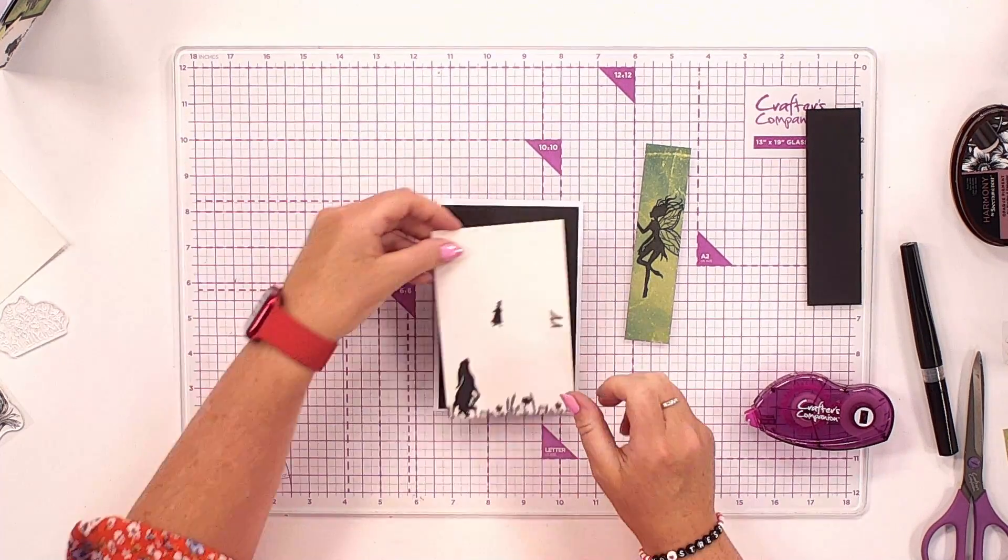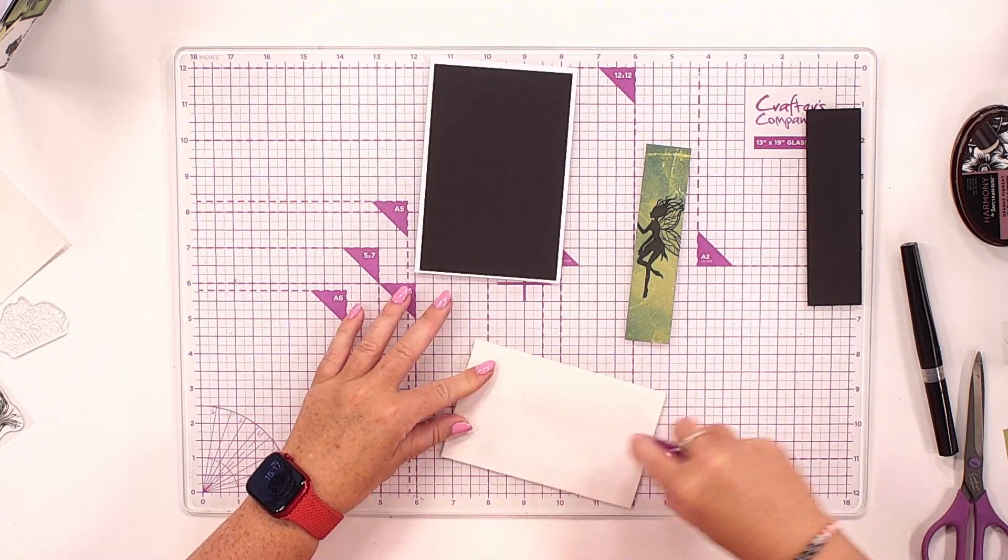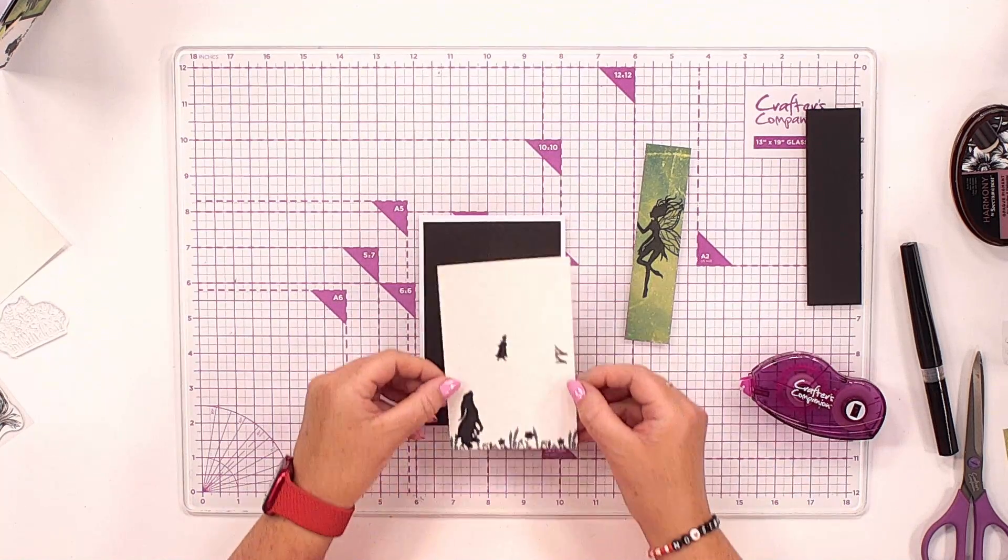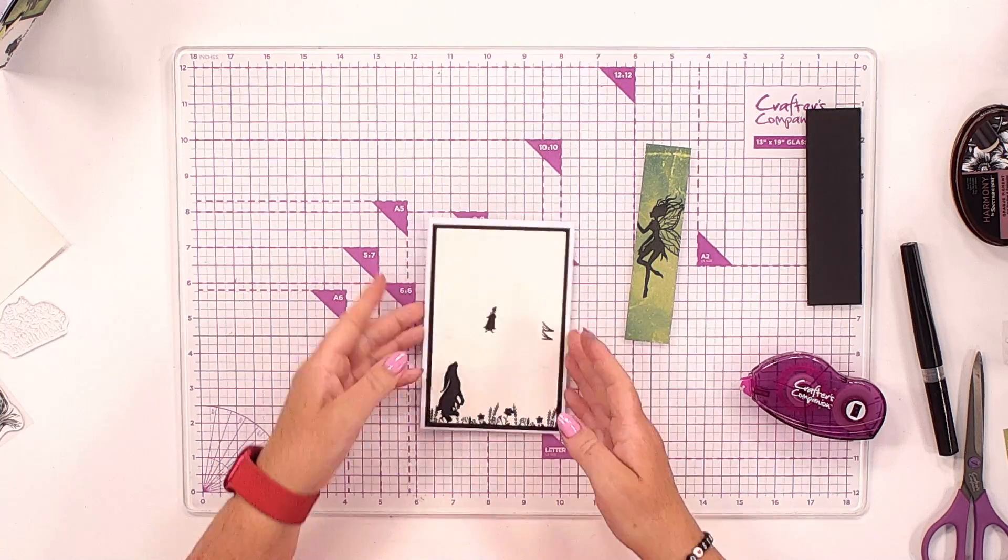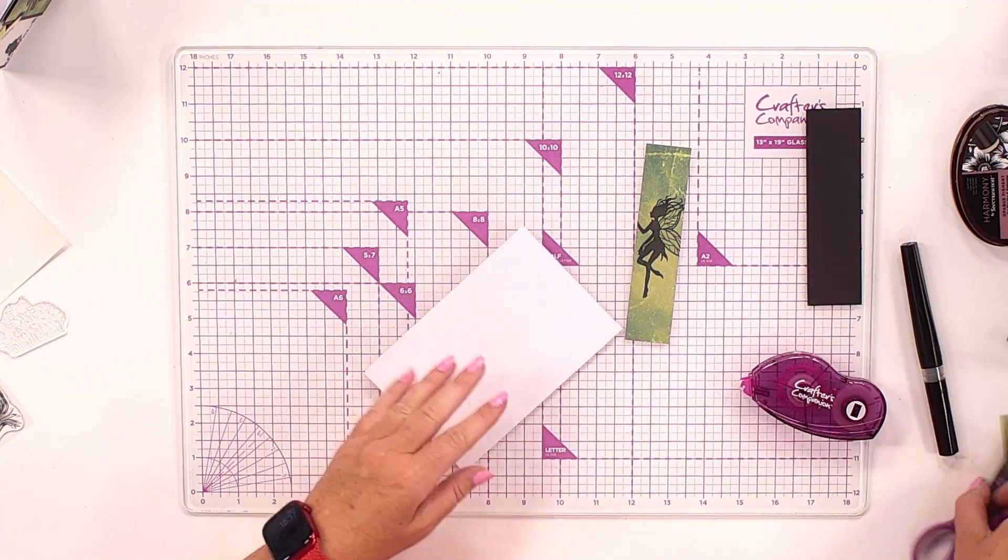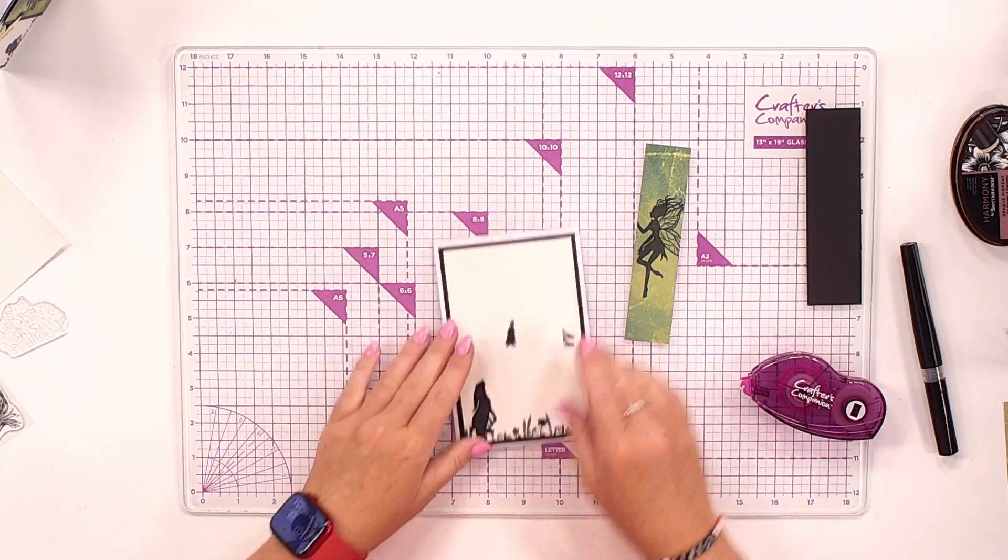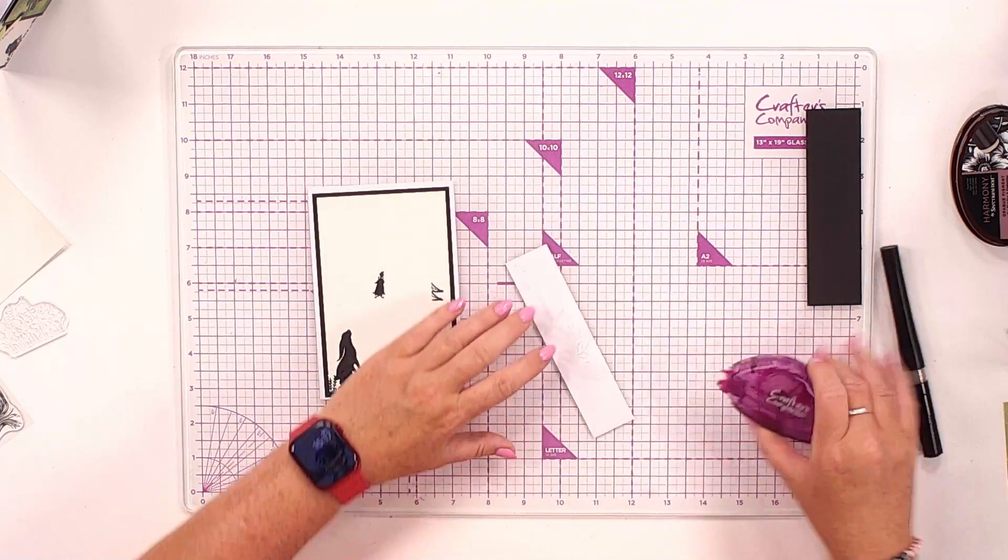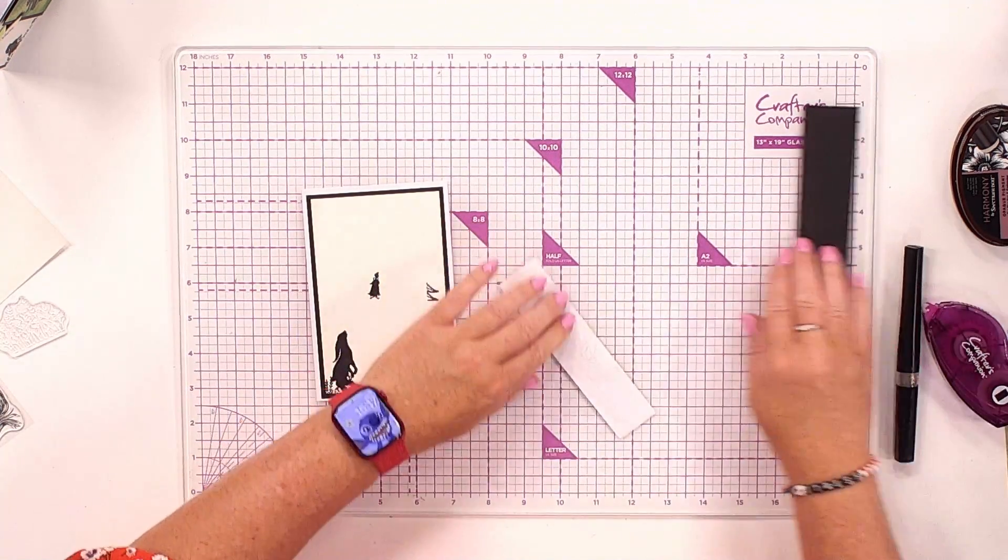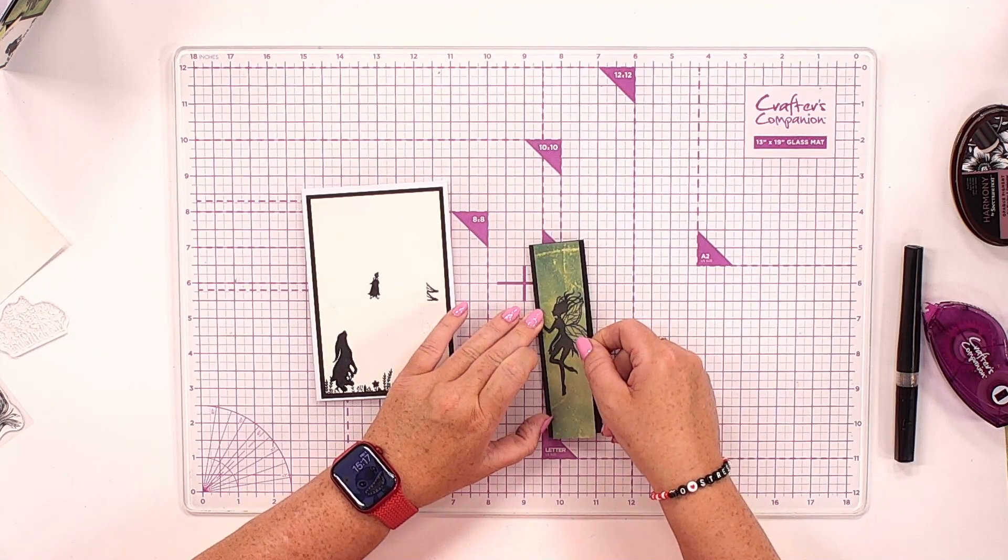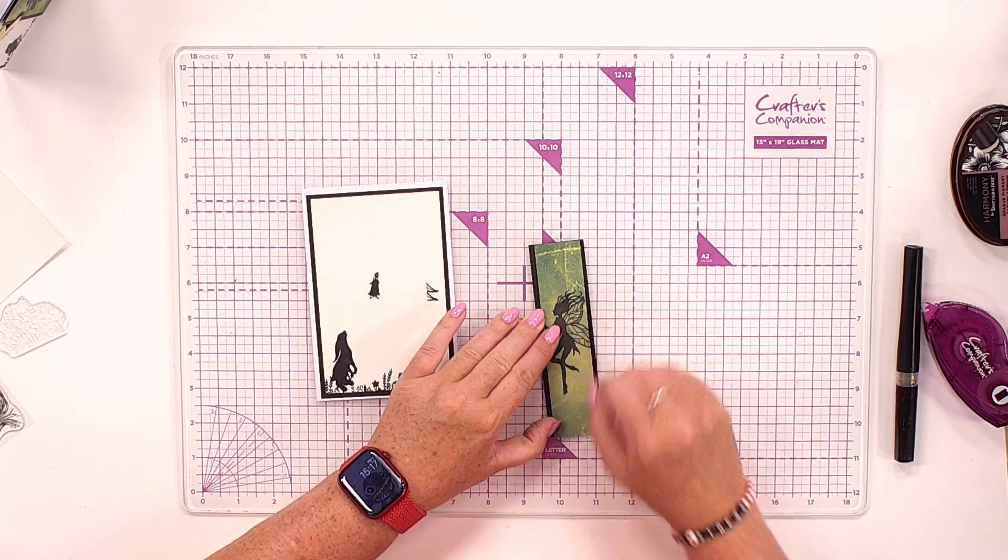And then we're going to use this one on the top as well. You could use foam pads if you wanted to add that definition or make it look a little bit more 3D. We're just going to lay ours flat down onto that border. We'll just turn around and give it a little bit of a burnish to make sure that's stuck nicely, and then we're going to place this one right in that center piece. But first of all we're going to pop that onto our black border, right into there.